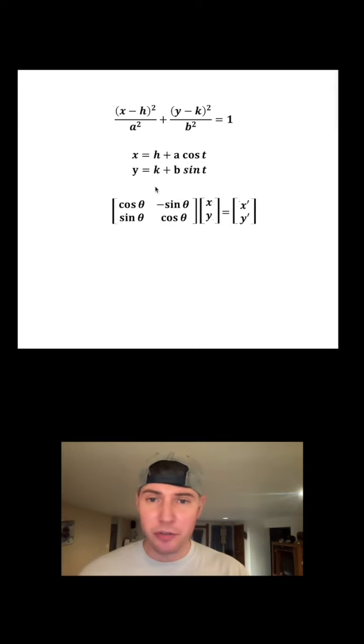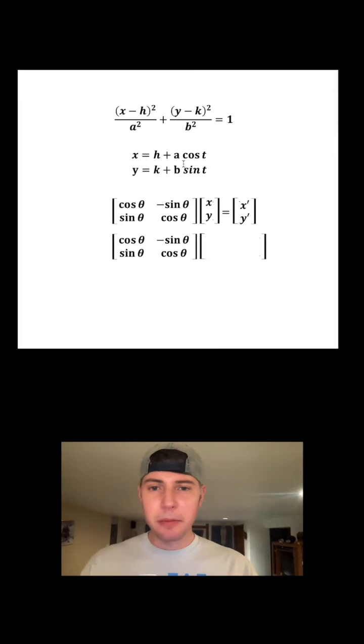The advantage of the parametric version is that we can easily apply the rotation matrix. We'll copy it down. In the place of the x, I'm going to plug in h plus a cosine t. In the place of the y, I'm going to plug in k plus b sine t.